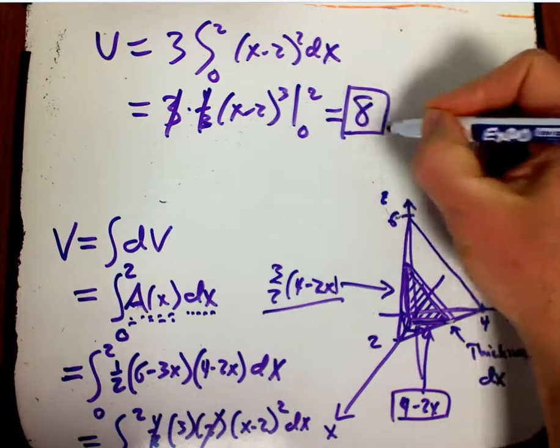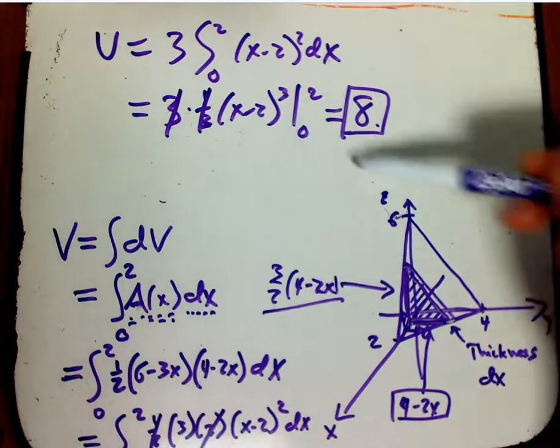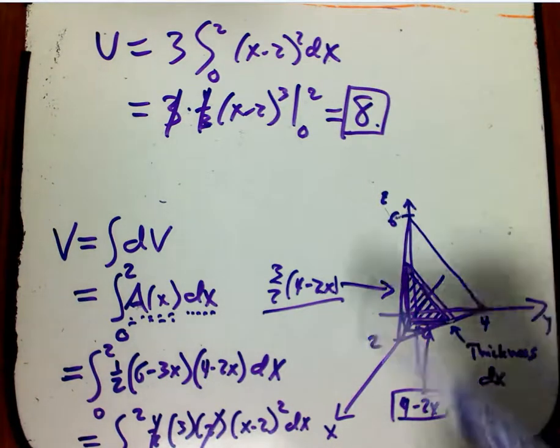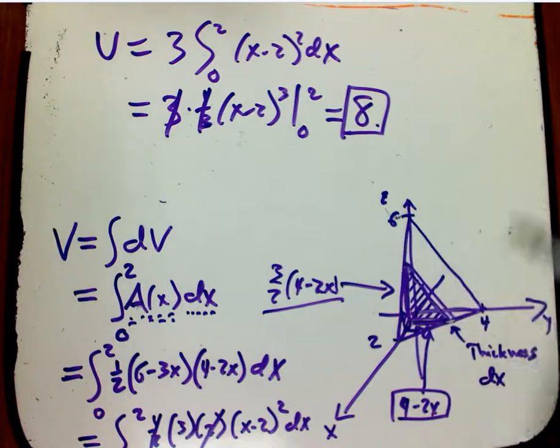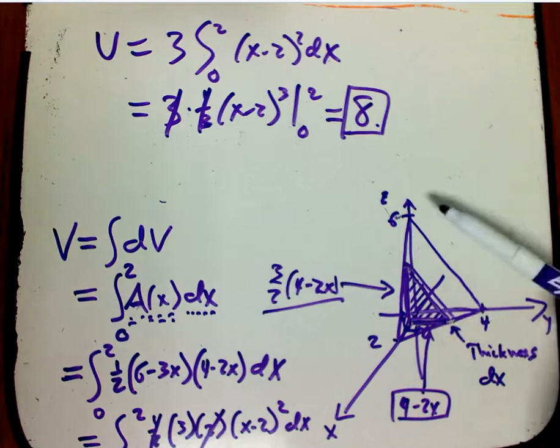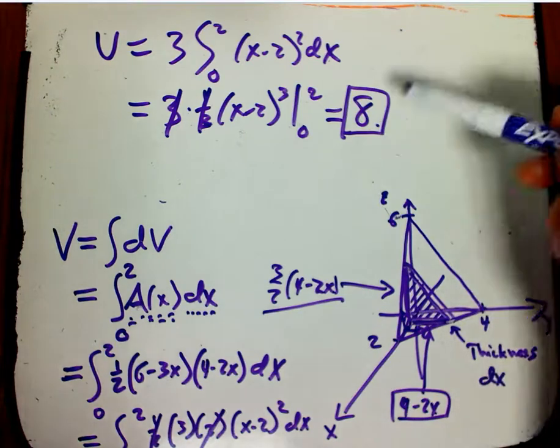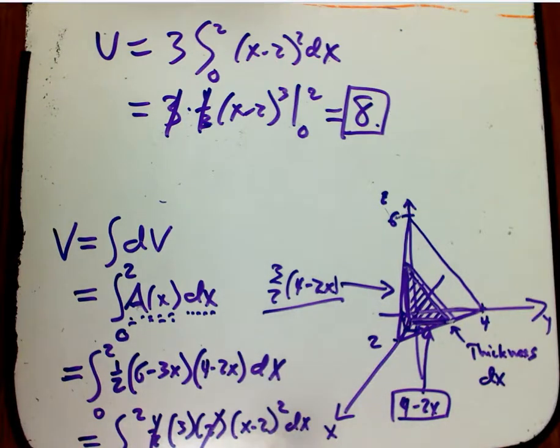Dude, you can check it. And indeed, if you have this predetermined formula for the volume of a tetrahedron with a right angle down here at the corner, you can check that. Most people don't actually know that, but it does turn out to be 8.